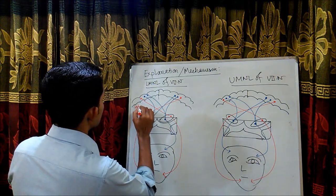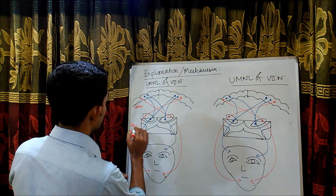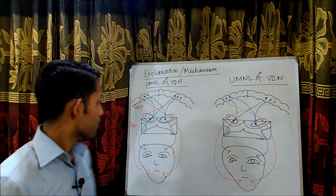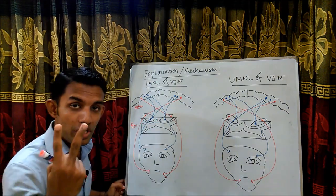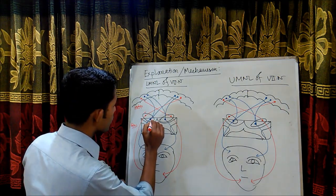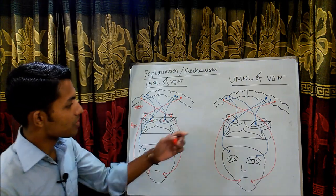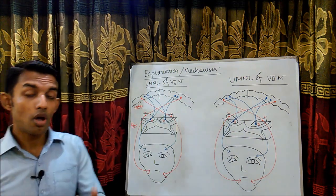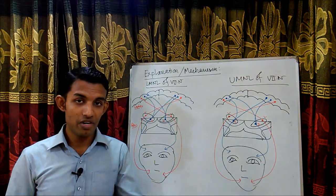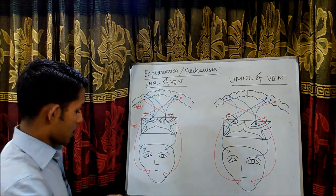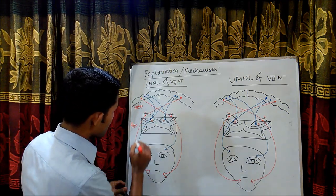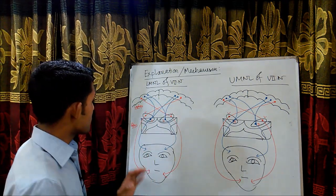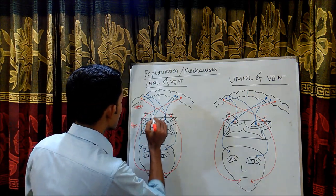This is the cortex and this is the pons. The facial nerve nucleus lies in the pons, and this facial nerve nucleus has two regions: one is the ventral region and another one is the dorsal region. The dorsal region supplies the upper part of the face and the ventral region supplies the lower part of the face.